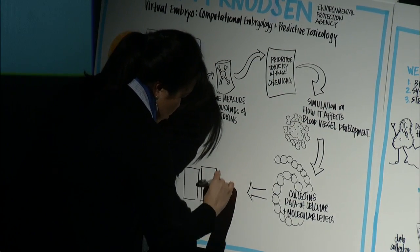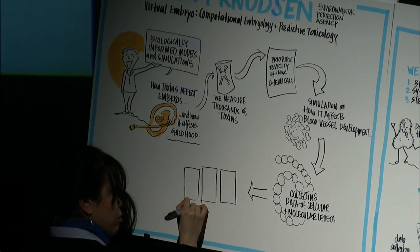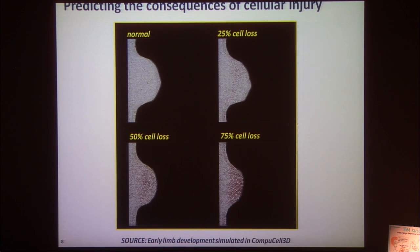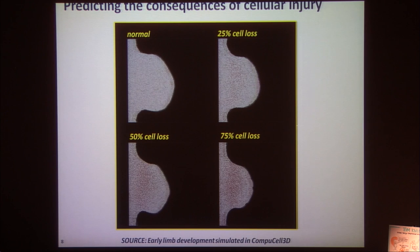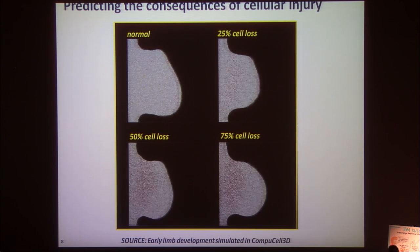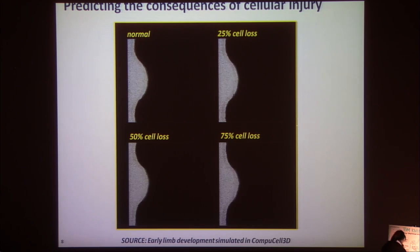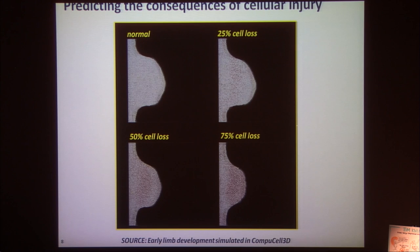With these types of models, we can now start incorporating the cellular and molecular data and making predictions about the consequences of different types of cellular injuries. We can begin to model what different amounts of cell loss collected from our in vitro assays might look like if put into an embryonic system at this time in development. You can see that this is modeling different amounts of apoptosis and what the impact might be on early development. We can go in and qualify these predictions experimentally.